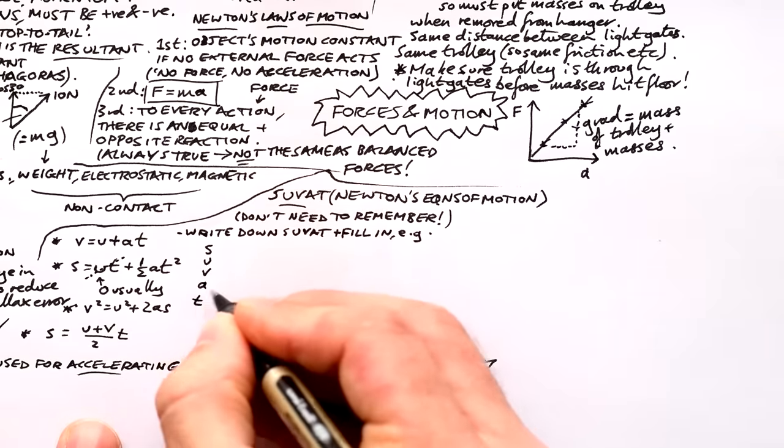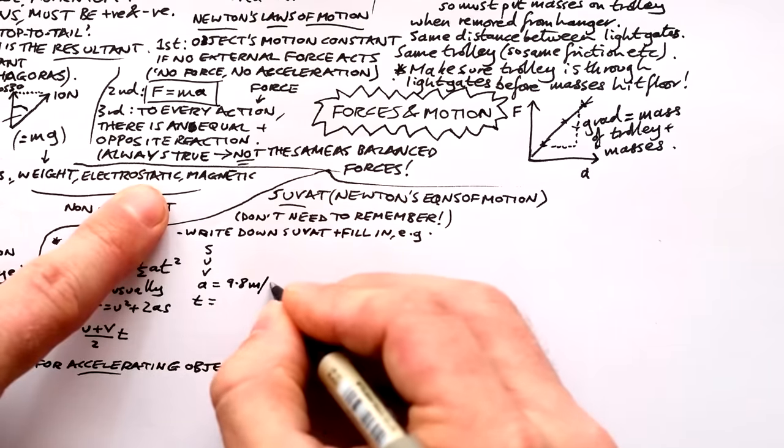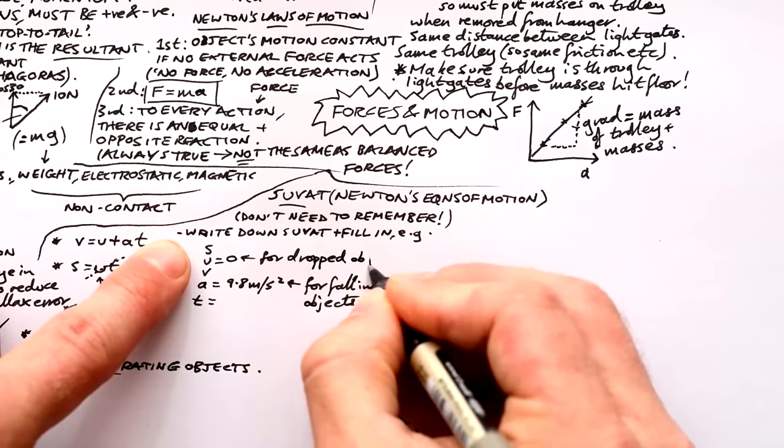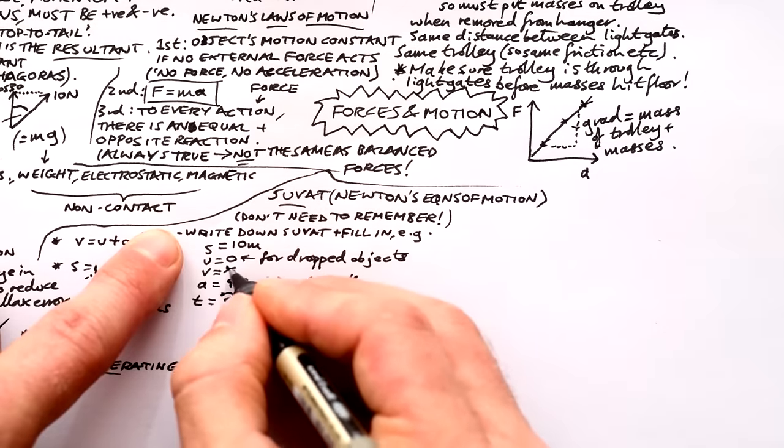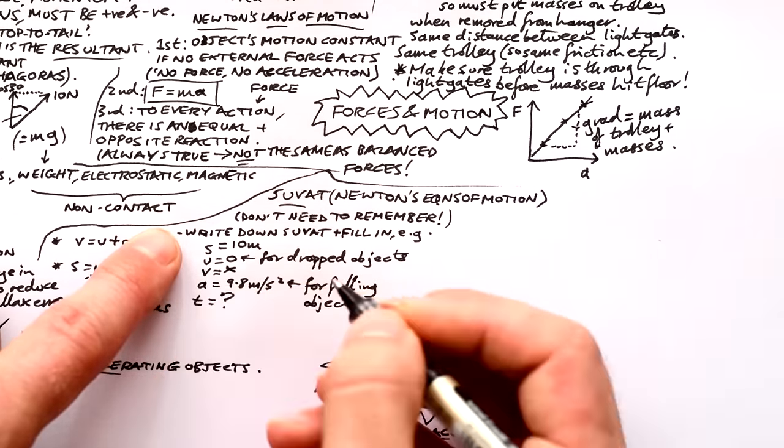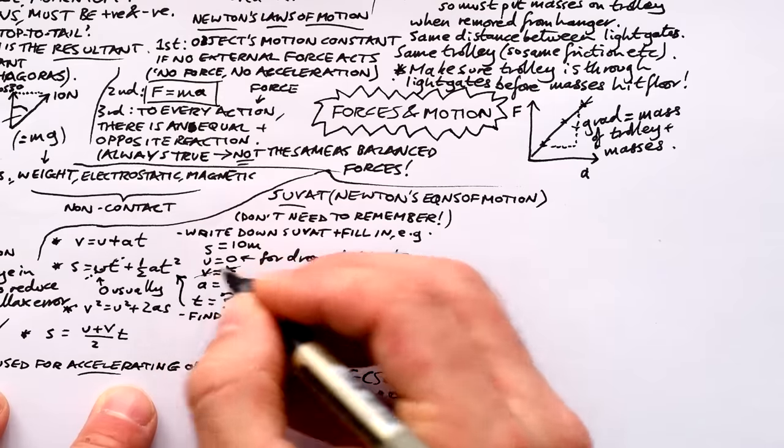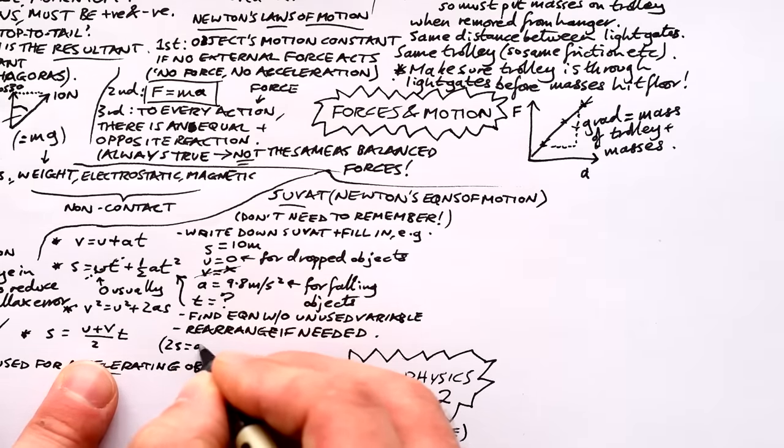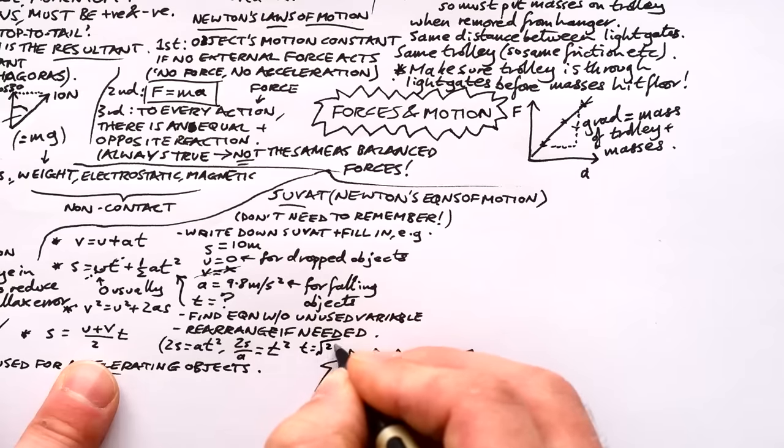With any question that uses SUVAT, we need to write down our variables and what they equal. Sometimes you won't be given actual numbers. Sometimes you'll be told it falls under gravity, in that case you know A is 9.8 meters per second squared. And if it's dropped, then that means U, the initial speed, is going to be zero. S is displacement, let's say you're given 10 meters. V is final velocity, let's say we're not using that one at all. And we want to find the time, so I'll put a question mark next to that. In this case, I want to find an equation that doesn't have V in, and the only one is S equals UT plus half AT squared. U is zero, so UT disappears. So S equals half AT squared. Now we need to rearrange it to find T. 2S equals AT squared, just double the whole thing. So 2S divided by A equals T squared. And then we can square root it all to find T at the end. So the time is equal to the square root of 2S over A.